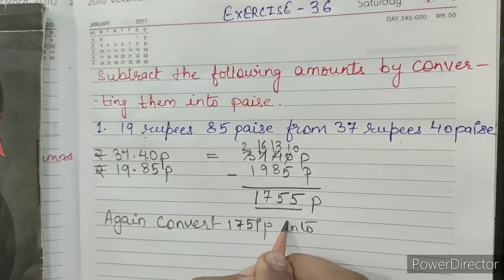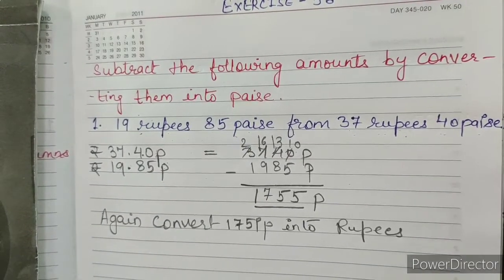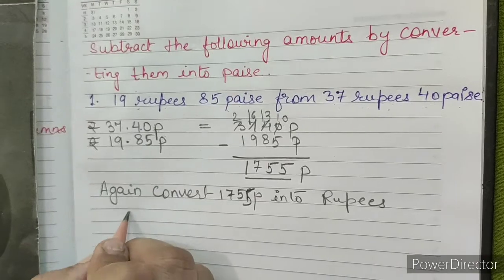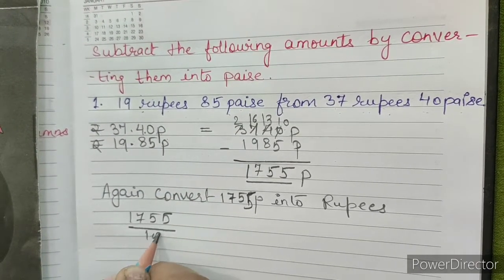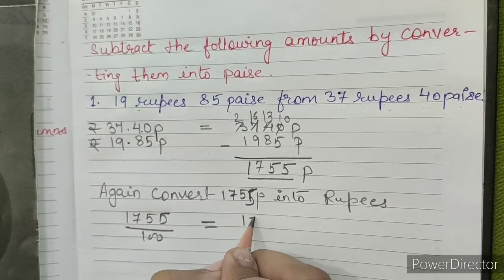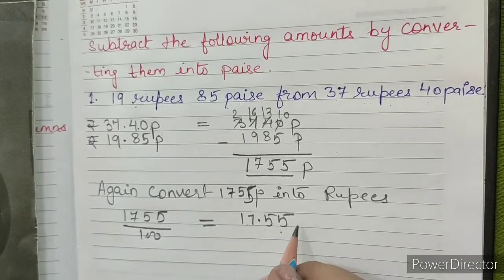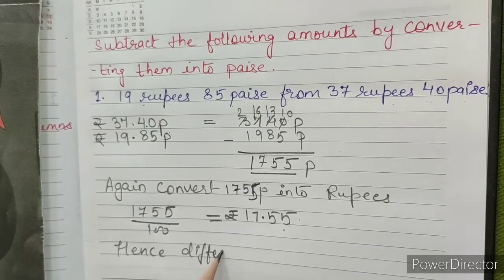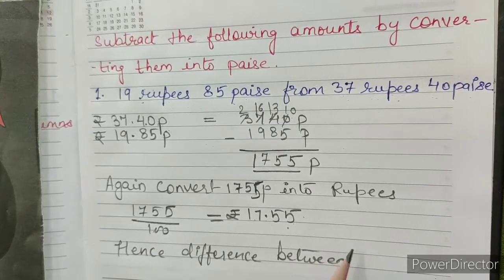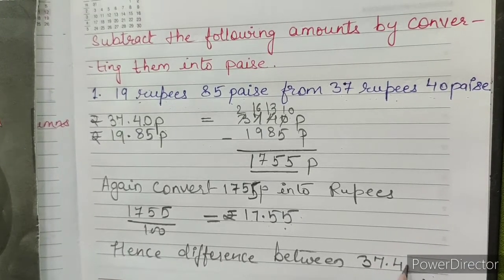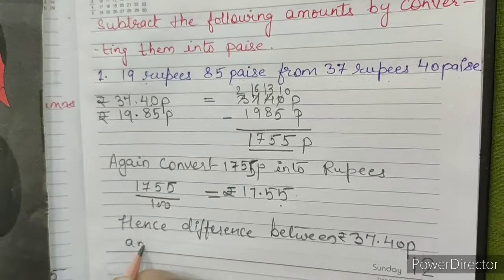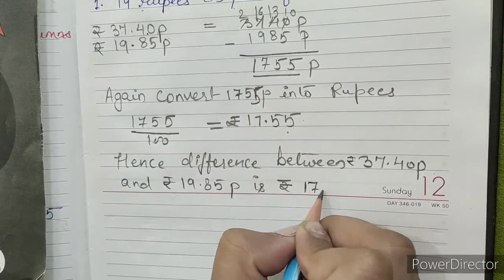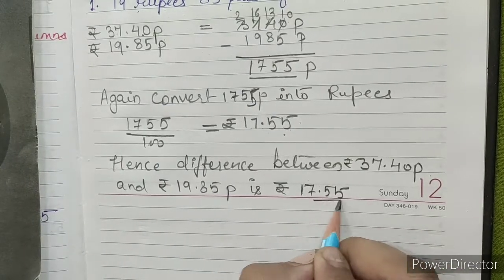Now we will convert 1755 paise into rupees. 1755 divided by 100 gives us 17.55 rupees. Hence the difference between 37.40 rupees and 19.85 rupees is rupees 17.55. This is our answer.